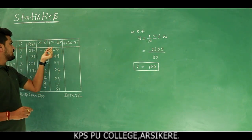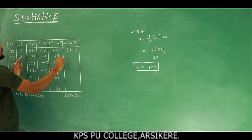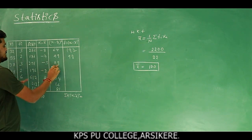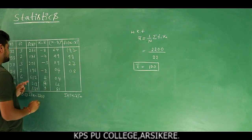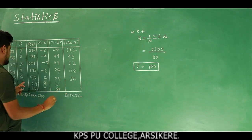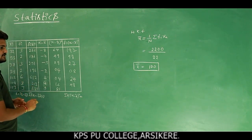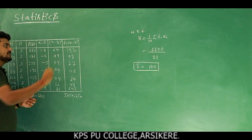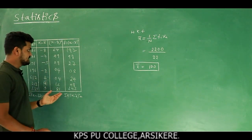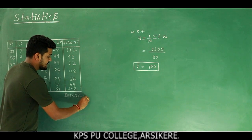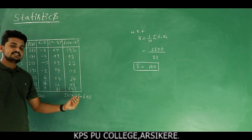Next, multiply each squared deviation by its corresponding frequency: 3×64=192, 2×49=98, 3×9=27, 2×4=8, 6×4=24, 3×16=48, 3×81=243. These are the values of fi × (xi minus x̄) whole square. The sum of these values gives summation fi × (xi − x̄)² = 640.